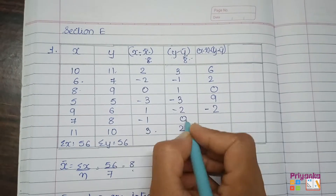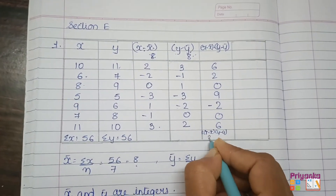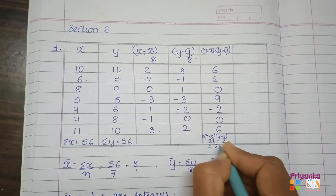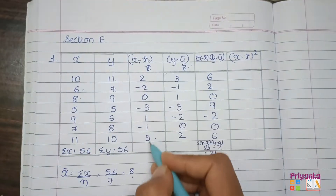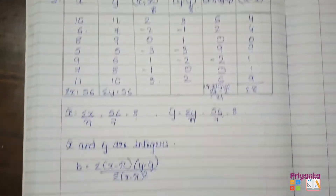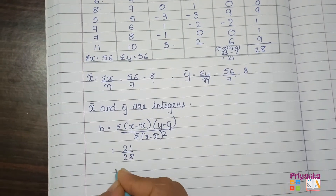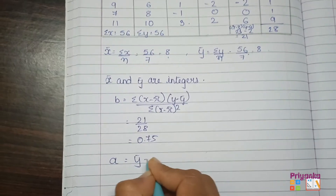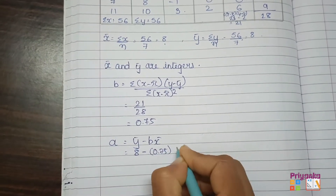The values are 1, 2, 0, 0, 3; totaling gives 23 − 2 = 21. Next, (x − x̄)² column: 4, 4, 4, 0, 9, 1, 1, 9 — total is 28. So b = 21 ÷ 28 = 0.75.